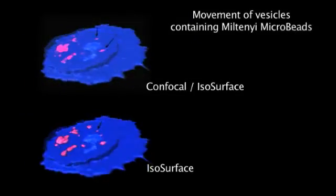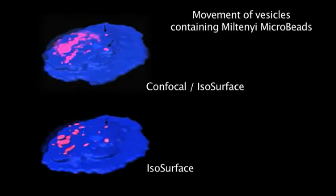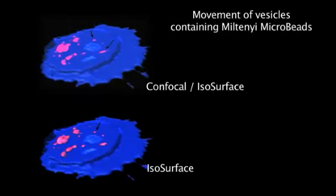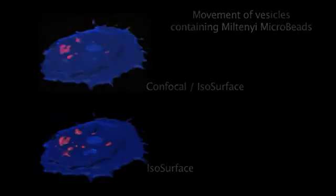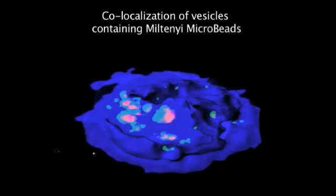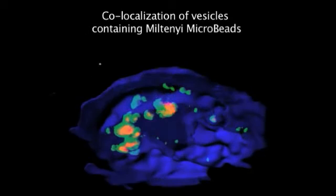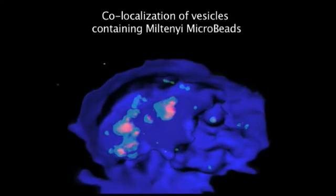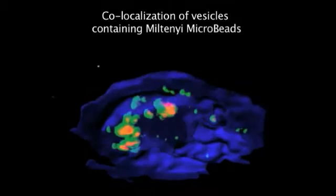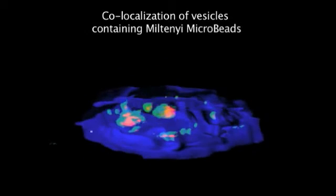Here, the arrows demonstrate movement of vesicles containing the Miltenyi microbeads. Using isosurface imaging, we see the vesicles containing the Miltenyi microbeads are co-localizing with acidic compartments. Acidic vesicles are labeled with LysoTracker green, and yellow color indicates co-localization with the Miltenyi microbeads.